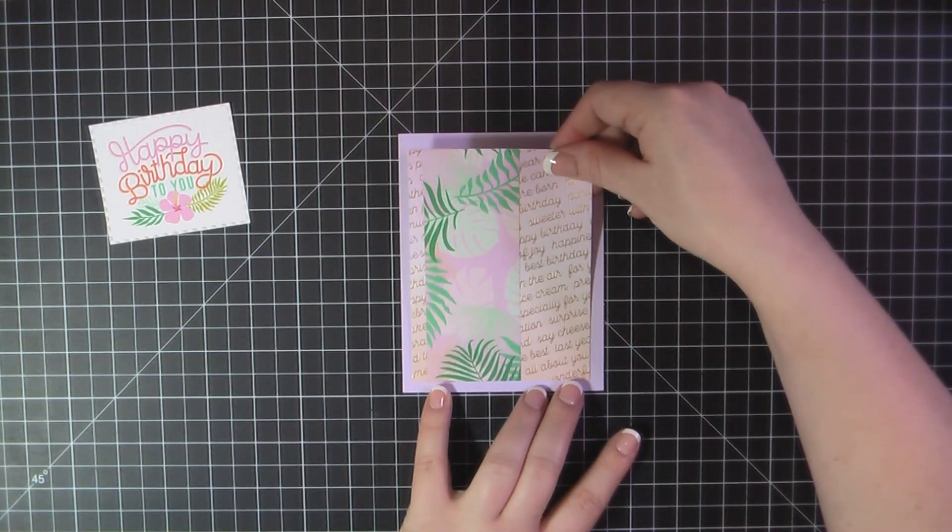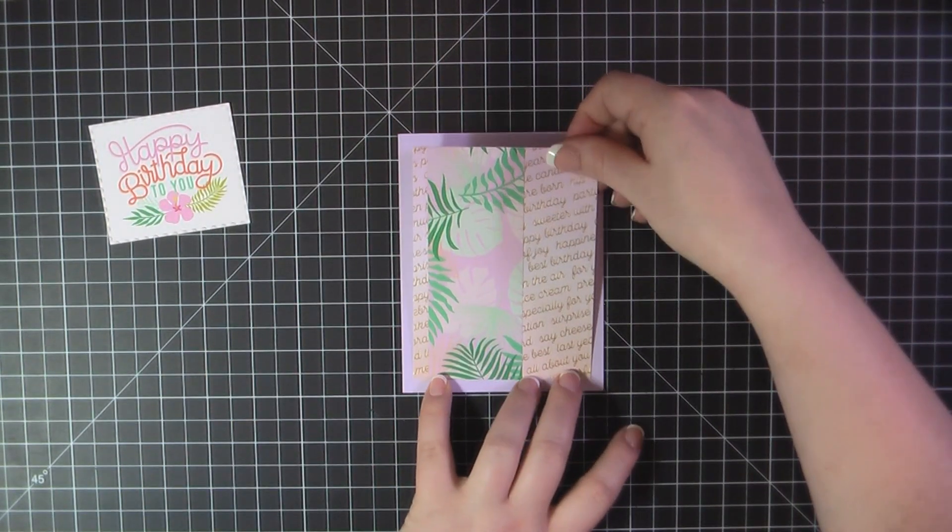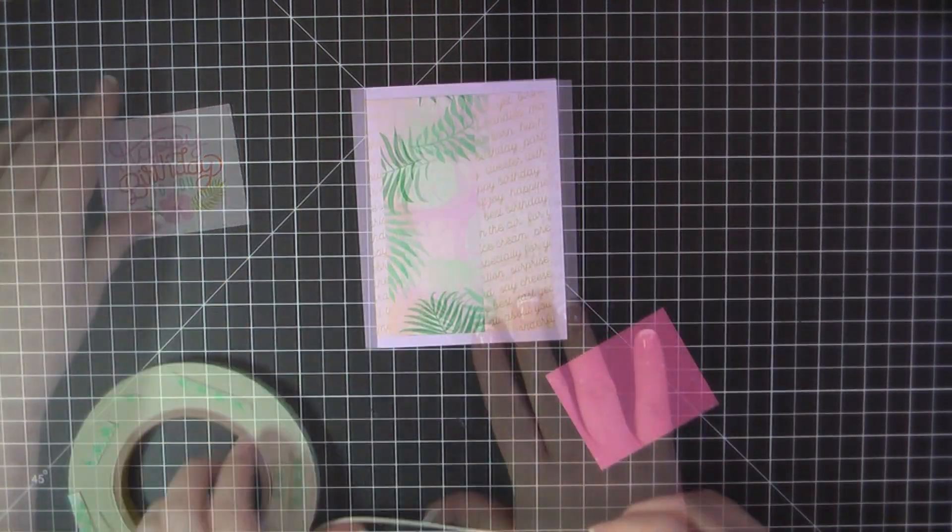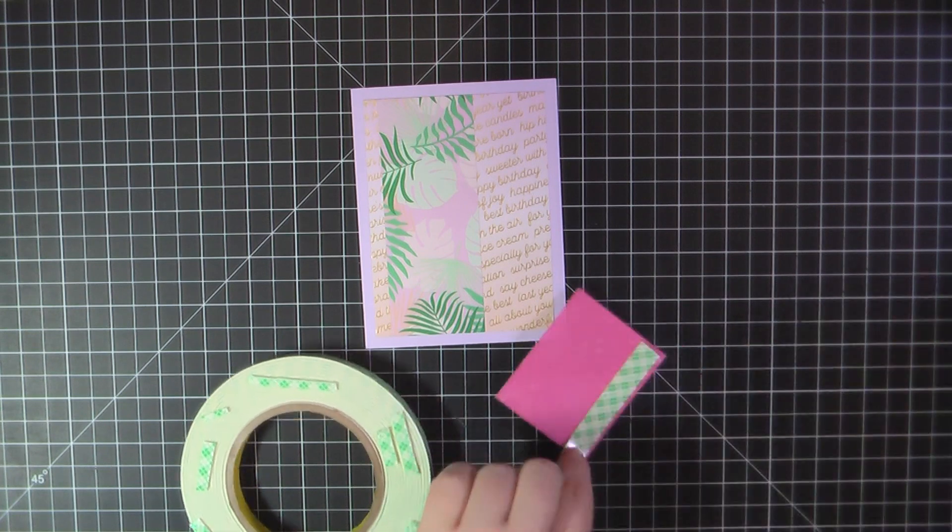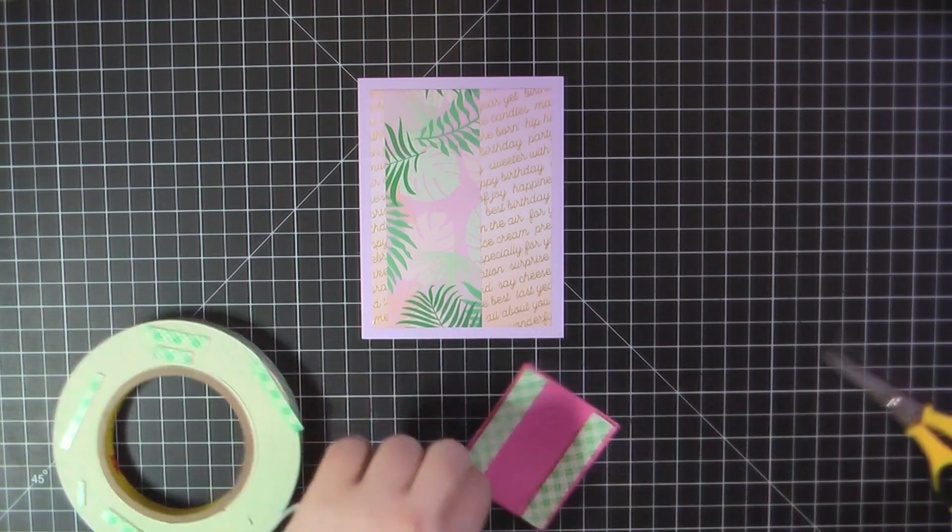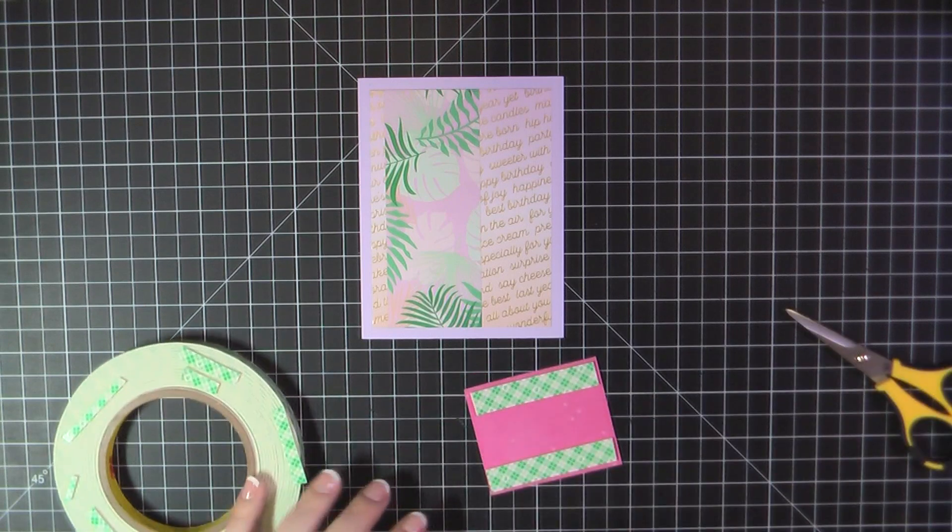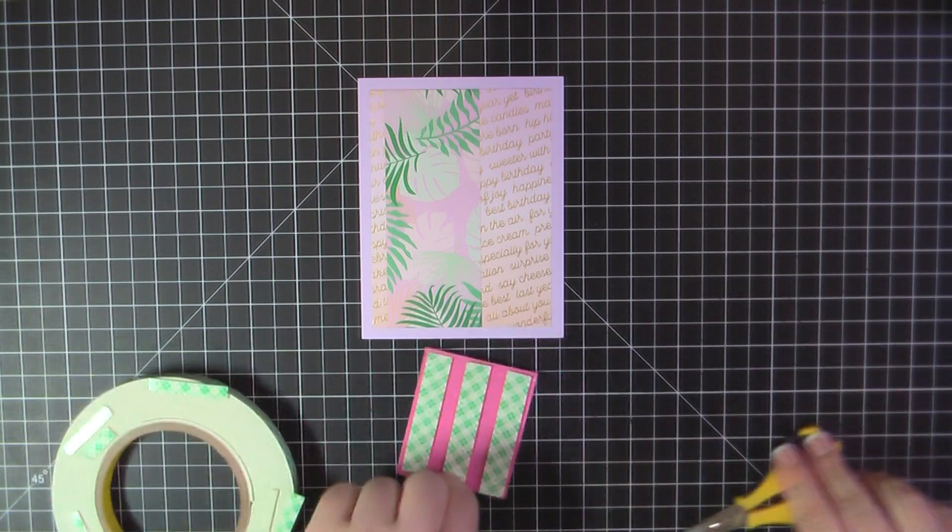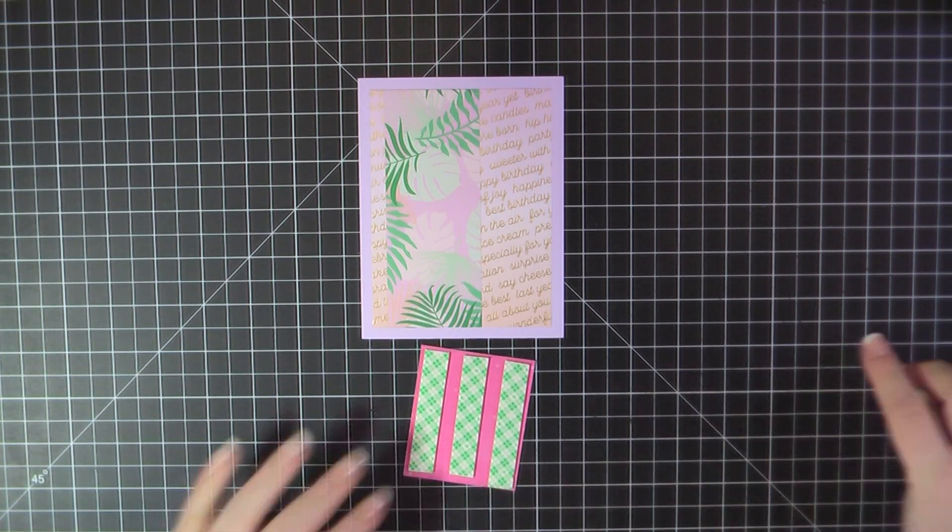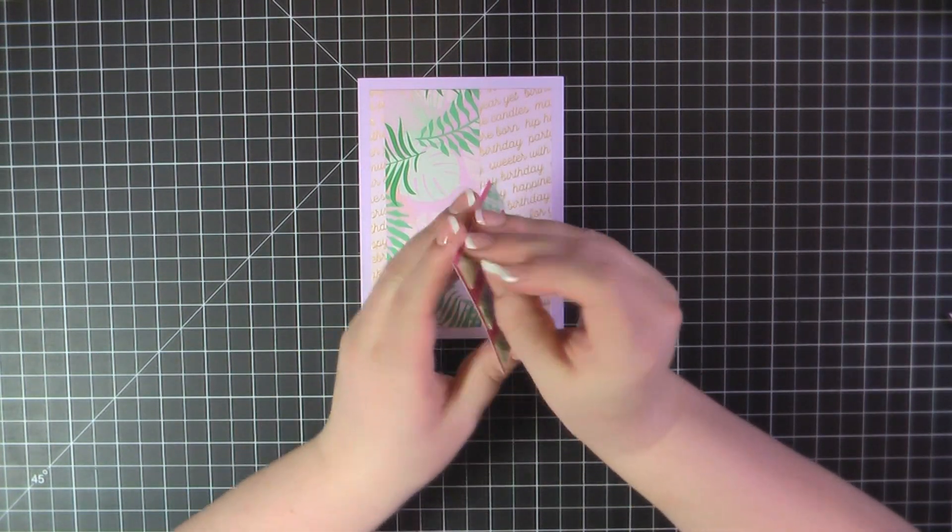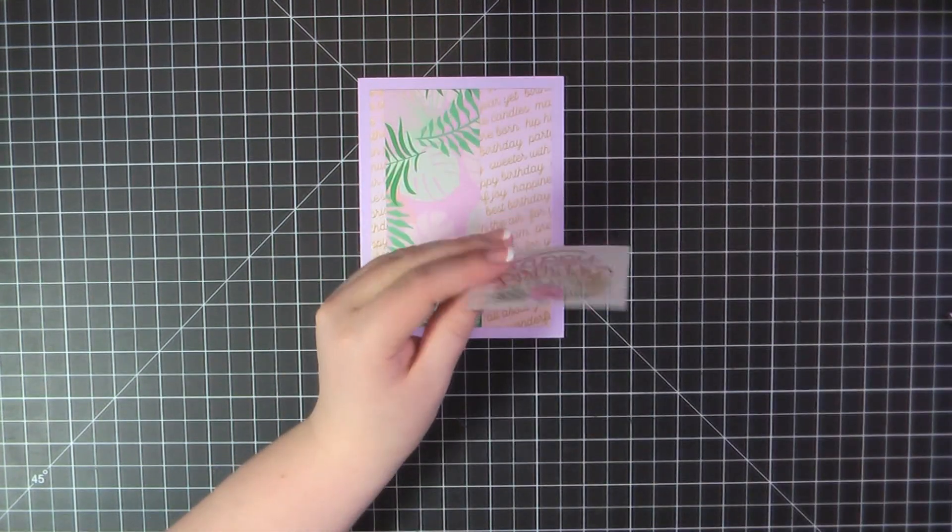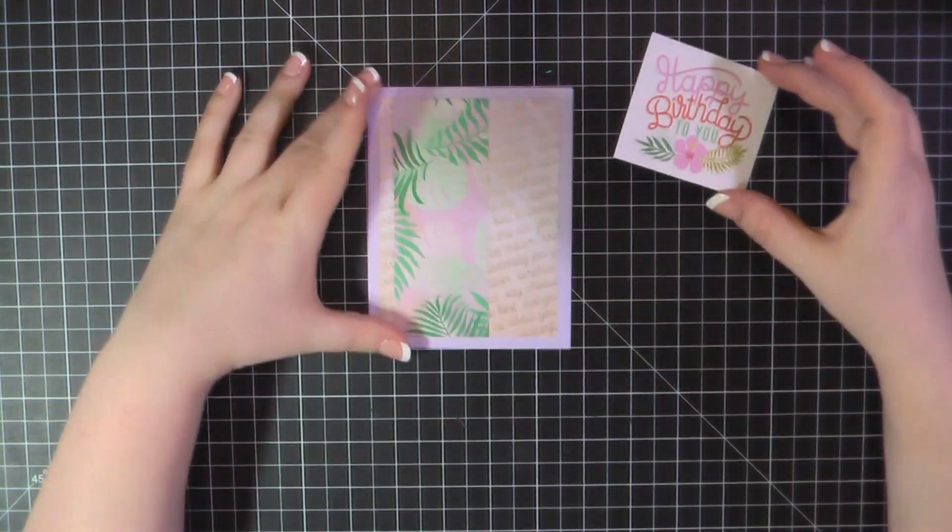So I have used about a two inch strip on top of this background pattern paper. And then I went ahead and trimmed that out again using that Blueprints 32 frame die. I've added some ATG to the back and I'm going to place that on top of my card base. This card base is made from MFT's Grapesicle. Here I've got another one of the cut aparts. I'm going to add some foam tape to the back of that.